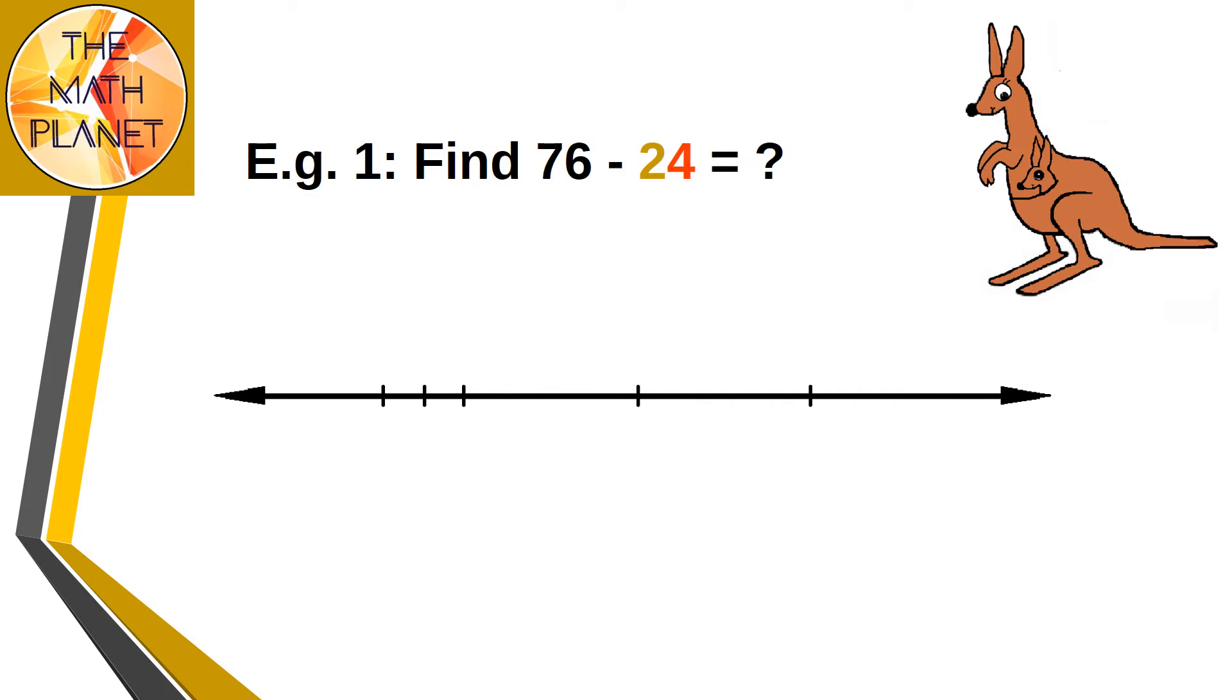Let's try to solve this example: 76 minus 24. We will start at 76. Then we will count back to subtract 2 tens and 4 ones. So our start point is 76.